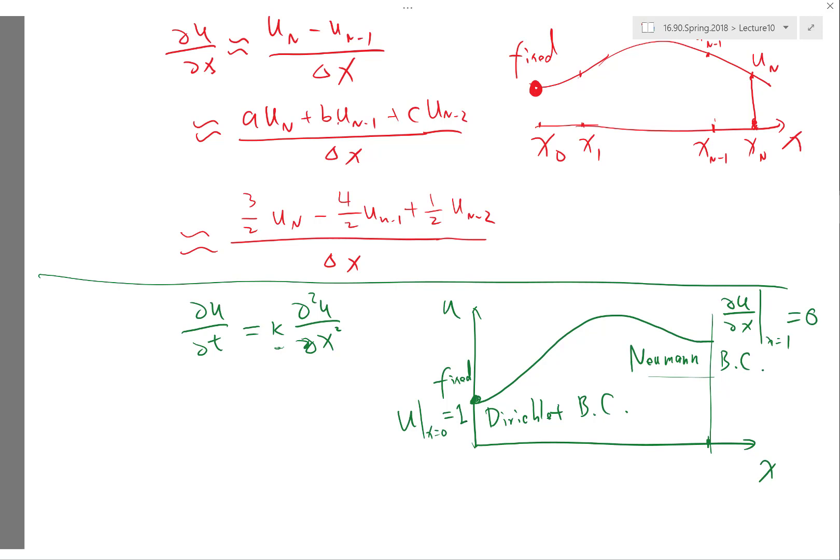So these are the two types of boundary conditions you can apply. And actually you can also mix them. A linear combination of u and du dx is equal to something. It's called a mixed boundary condition or hybrid boundary condition.